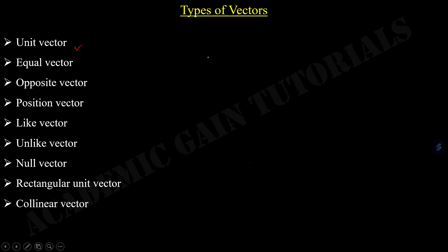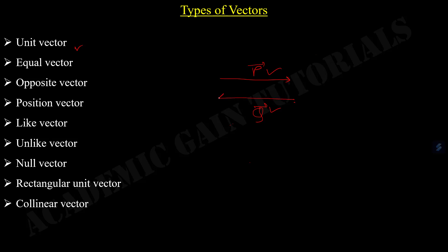For equal vectors, consider two vectors P and Q. If both vectors have the same magnitude and are in the same direction, then P and Q are known as equal vectors. If we draw the Q vector in the opposite direction but with the same magnitude, then it is known as an opposite vector.